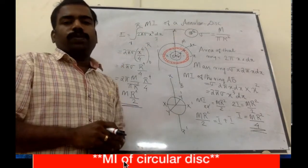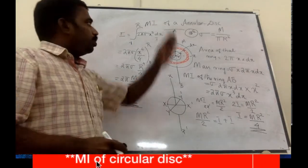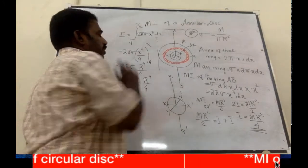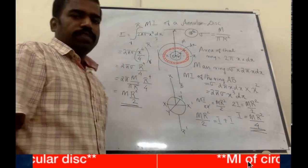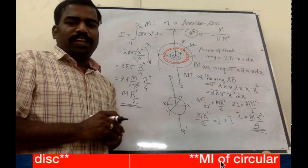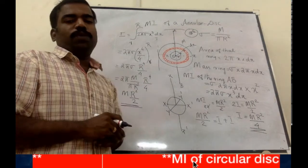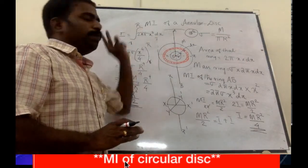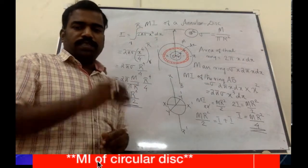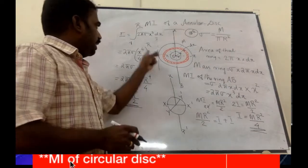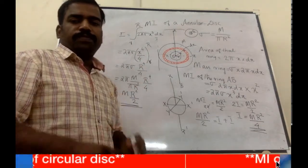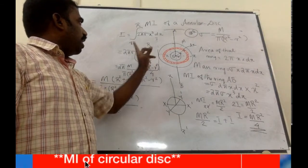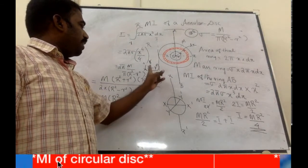The circular ring element procedure is the same. We use the same formula and integrate from small r to capital R. Just write down the expression: the result is 2 times sigma times (R to the 4 minus r to the 4) divided by 4.